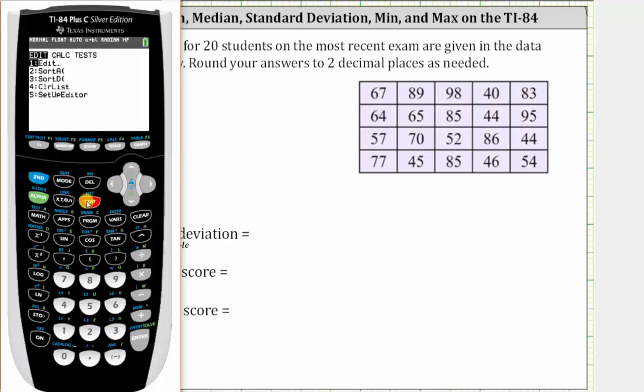Press STAT. Right arrow once to CALC. Notice one-var stats is already highlighted, so we press ENTER. The data is in L1, which is correct. If it was in a different list, we can change that here. We are not using the frequency list, so we can skip that, go down to CALCULATE, and press ENTER.